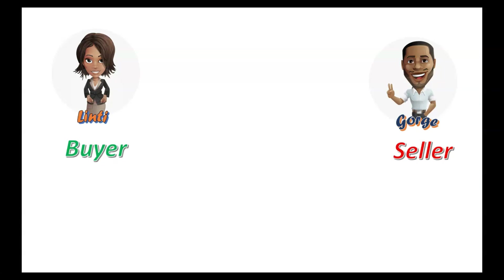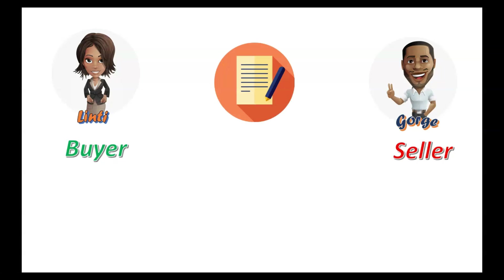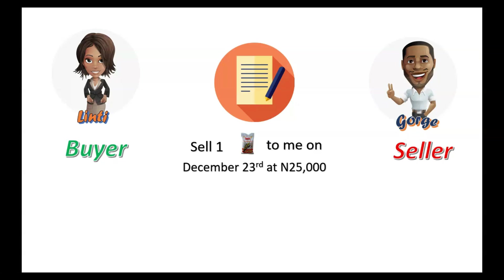What she did was put forth a contract and say: 'George, please sell me one bag of rice for 25,000 on December 23rd.' Mind you, the current price in September is 24,000. George agreed and signed the contract because he believes the price of rice is actually going to go down, not up.